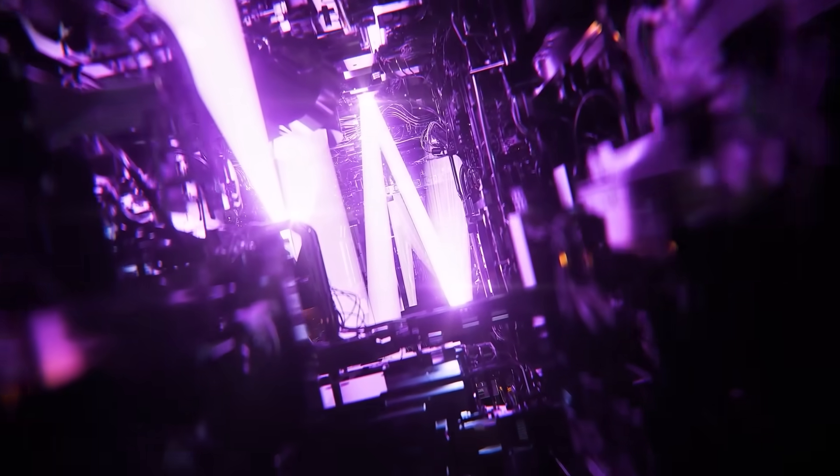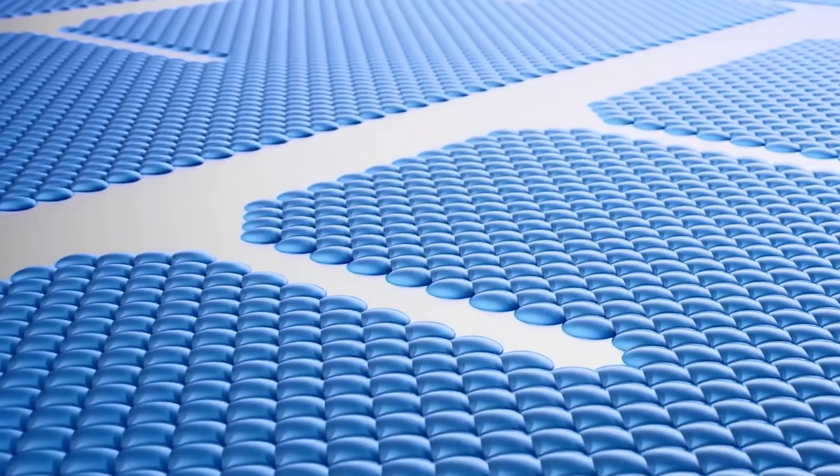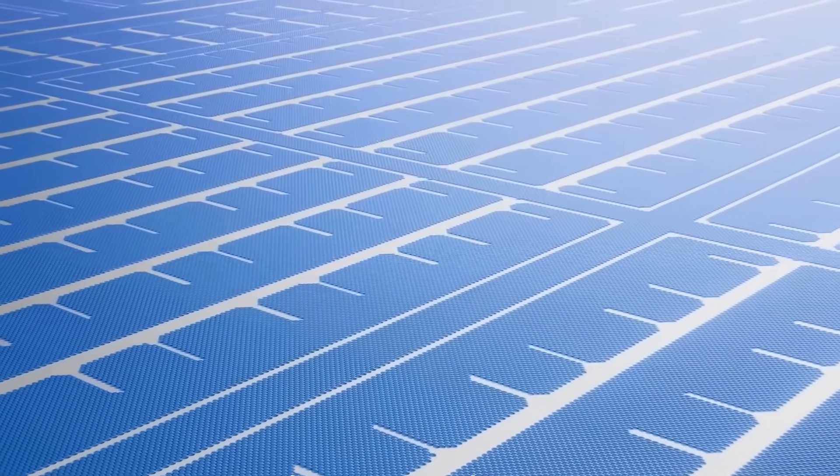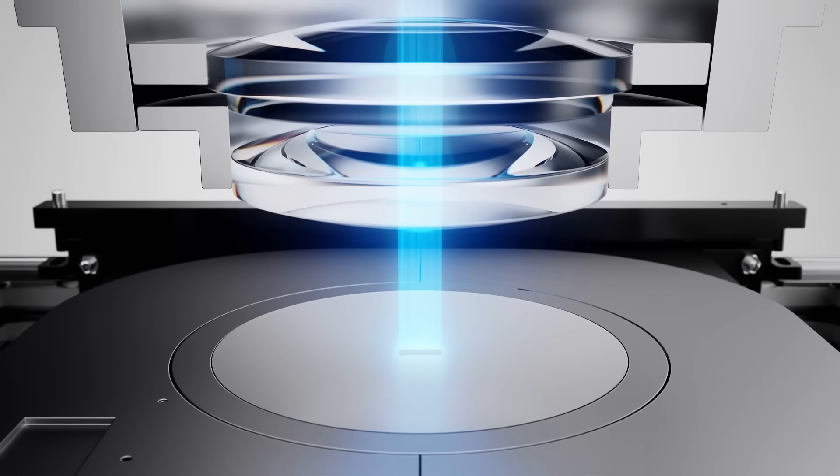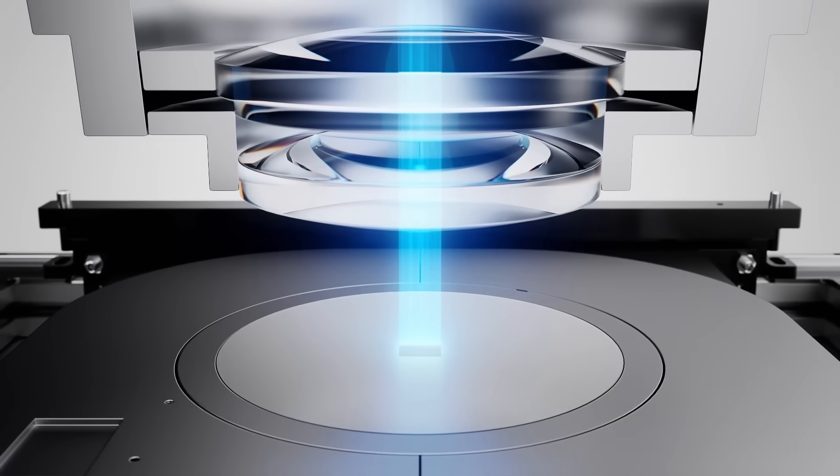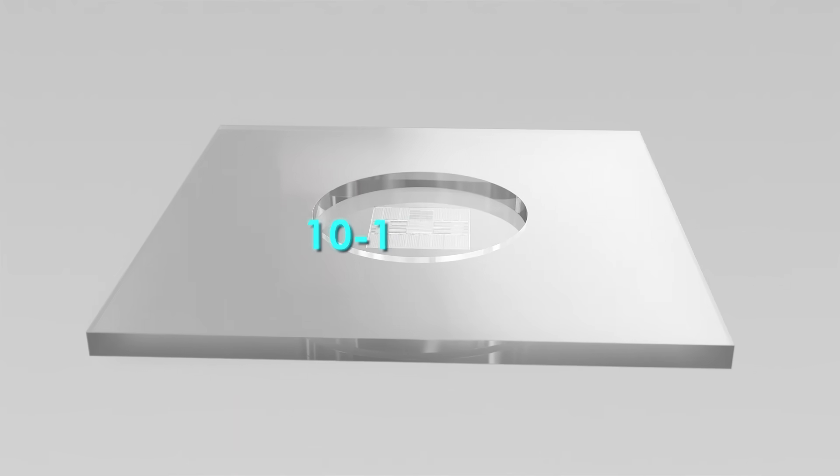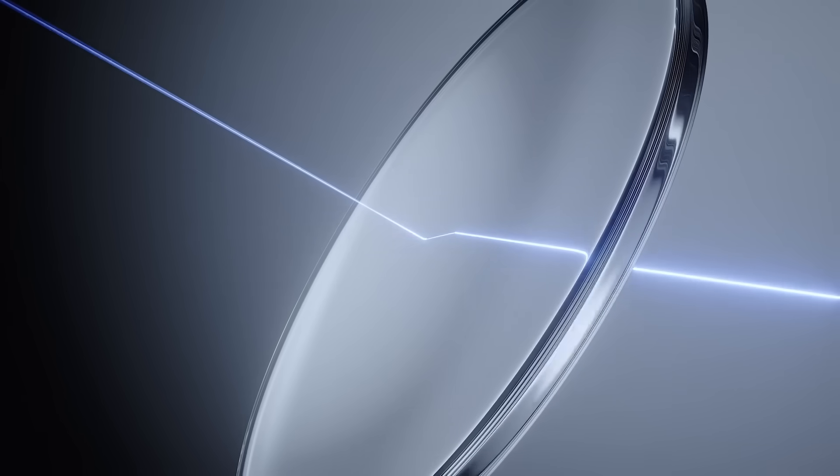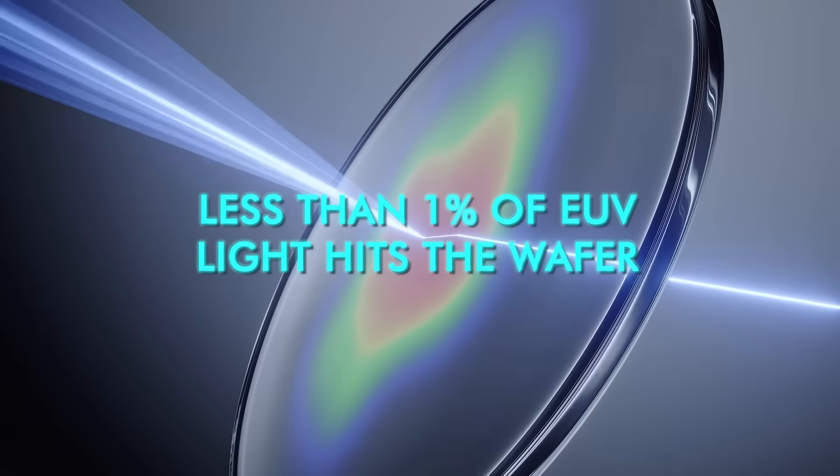It takes exponentially more energy to produce light with shorter wavelengths. In fact, EUV light is produced by vaporizing tin droplets with an extreme power laser, turning it into plasma 40 times hotter than the surface of the sun. Light with shorter wavelengths also needs to be more focused. Reflecting EUV light requires 10 to 12 mirrors, with each mirror absorbing 30% of the light, and you end up with less than 1% of EUV light hitting the wafer.